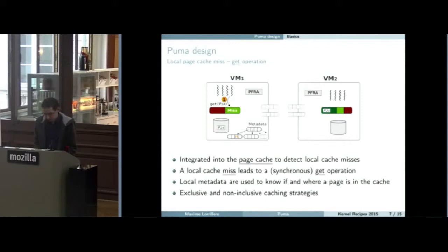The second operation is a get operation. We want to get back a page that was sent previously into the cache. This is actually a miss into the cache. When we want to read new data from the block device, before going to the block device, we will test into the metadata if we know that the page has been sent into the cache. If this is the case, we send a request to the remote VM and then it sends back the page.